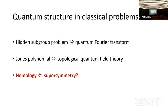The hidden subgroup problem can be seen as related to the quantum Fourier transform, which is efficient to do on a quantum computer. Another example is the Jones polynomial, which in the 2000s was studied and became a BQP-complete problem. This can be seen as a relationship between the Jones polynomial and topological quantum field theory, which has to do with braiding anyons. I'd like to convince you that homology is a new example of this — a new example where we see a relation to quantum mechanics, and in this instance, it will be supersymmetry that homology corresponds to.